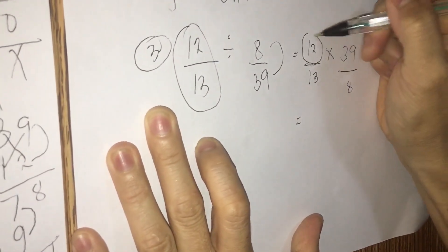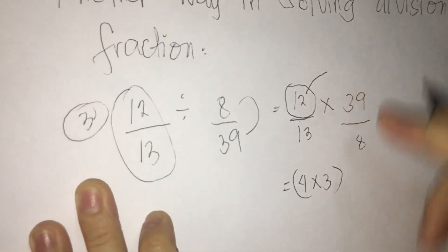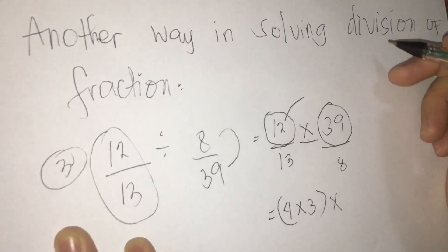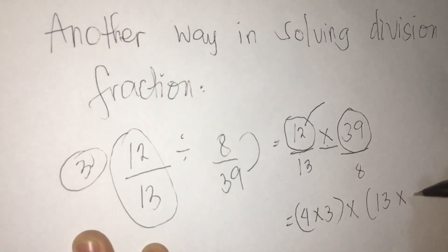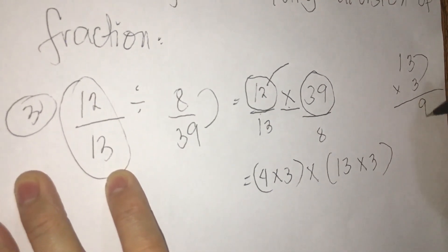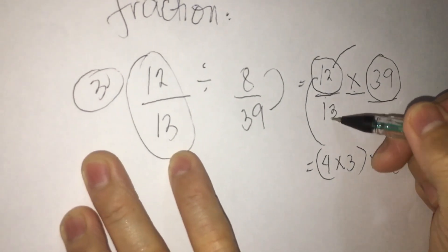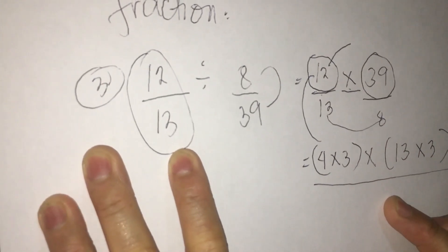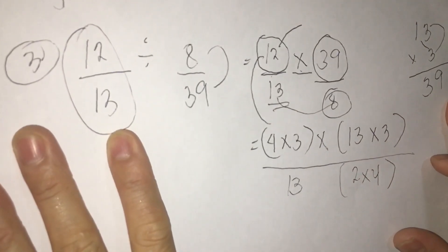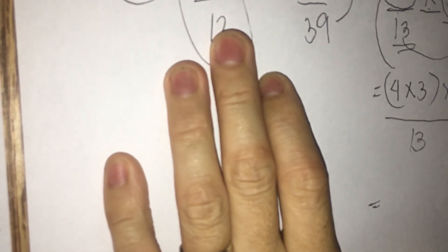We're going to find the factor of 12, which is 4 times 3. Then we copy the multiplication symbol. Next, find the factor of 39: the factor of 39 is 13 times 3 — because 13 times 3 is 39. Then for the denominator side, we write 13, and factor 8 as 2 times 4. Now we apply cancellation of common factors. We have 4 and 4, and 13 and 13, and 3 and 3 as common factors that cancel out.